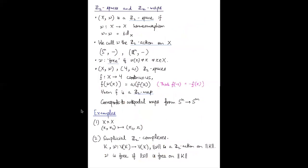The first topic is Z2 spaces and Z2 maps. We say that a pair (X, ν) is a Z2 space, where X is a topological space and ν from X to X is a homeomorphism such that ν applied twice gives you the identity on X. We call ν the Z2 action on X. This is essentially giving us a way to generalize the notion of antipodes that we have for spheres. On spheres S^n, we have the map that sends x to minus x — it's a homeomorphism, and applying it twice gives identity.